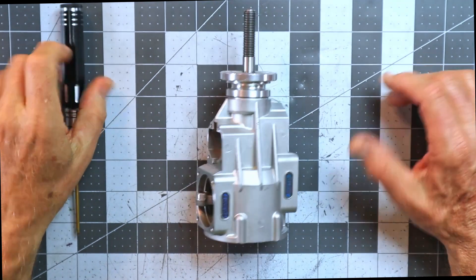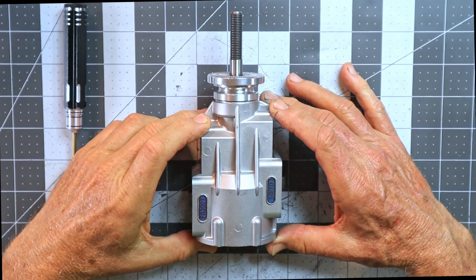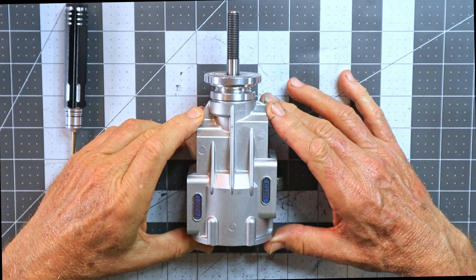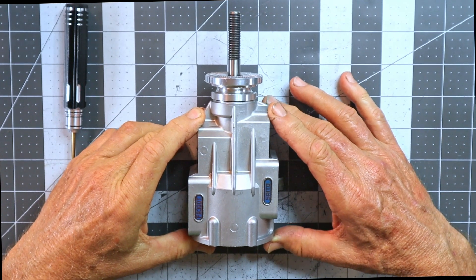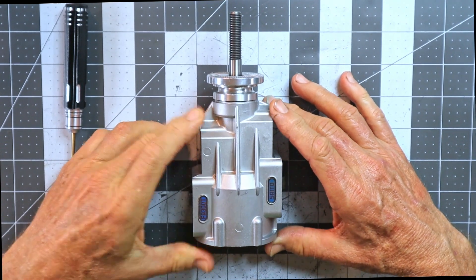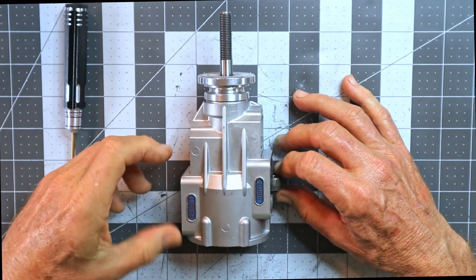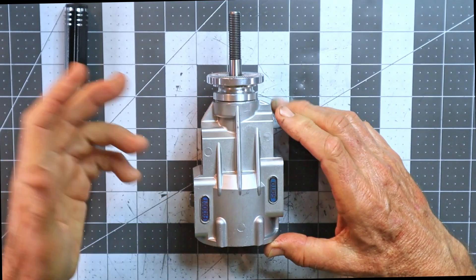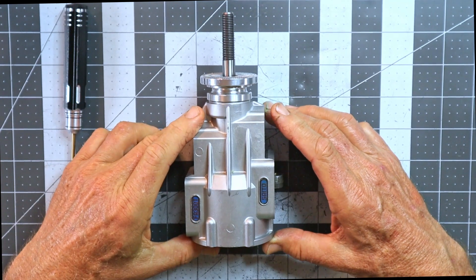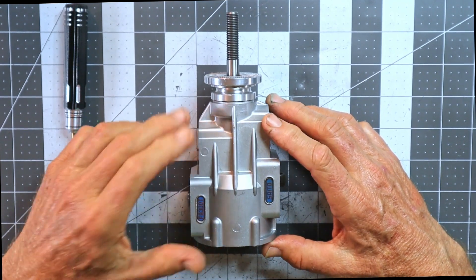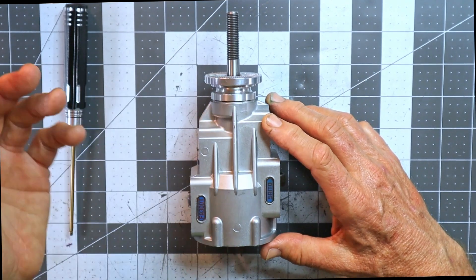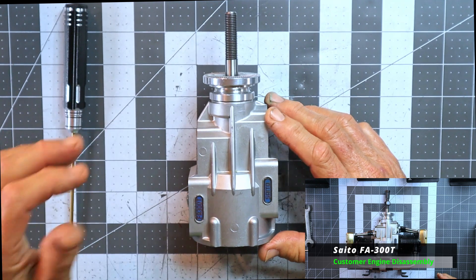Good morning and welcome to a very interesting connecting rod issue that I've never seen before. On the table here I've got the main crankshaft, crankcase, and bearings connecting rods of a customer's Sato FA300T engine. This goes back to one video prior to this and you can watch that.